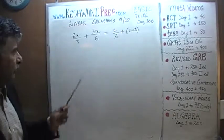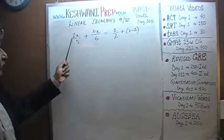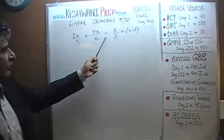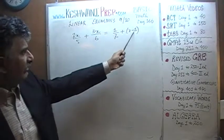As you can see, the problem is already on the blackboard. We are told that 2x over 5 plus 3x over 6 equals half plus x minus 1.